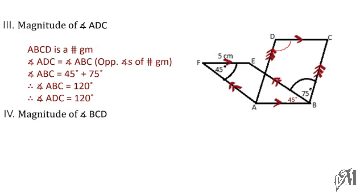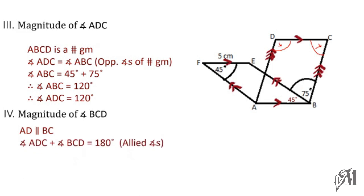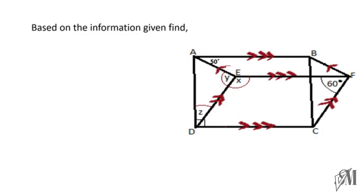Moving on, we have to find the magnitude of angle BCD. Since AD and BC are parallel, angle ADC and angle BCD are allied angles, which means their sum is 180 degrees. We have already found angle ADC to be 120 degrees, therefore angle BCD will be 180 minus 120, that is 60 degrees.